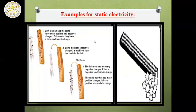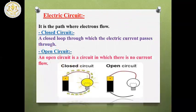Here is static electricity: when you rub your hair with a comb, at the beginning both hair and comb have equal positive and negative charges — they are neutral. After rubbing, the electrons move so they become charged positive or negative. The comb gains electrons and has the ability to attract pieces of paper.